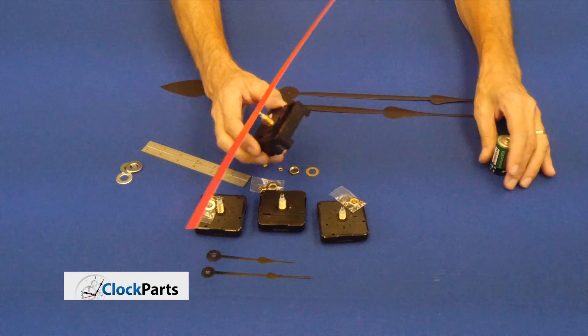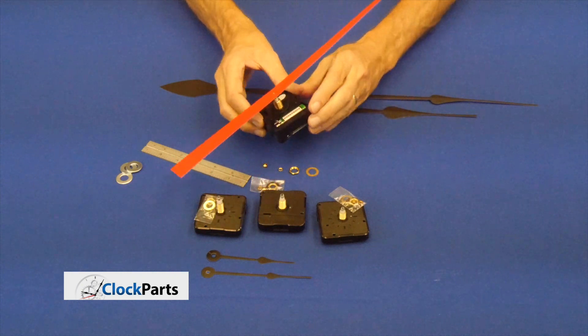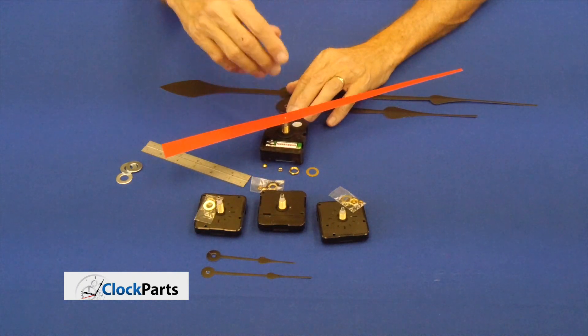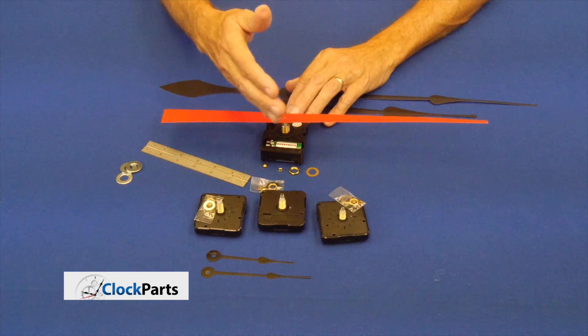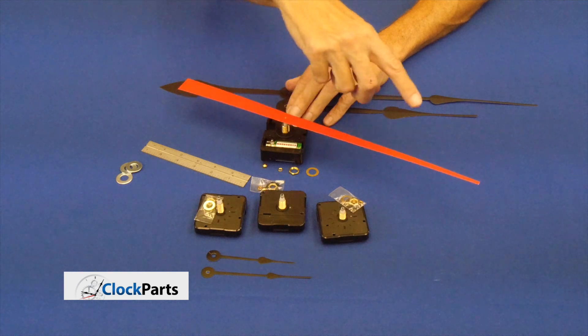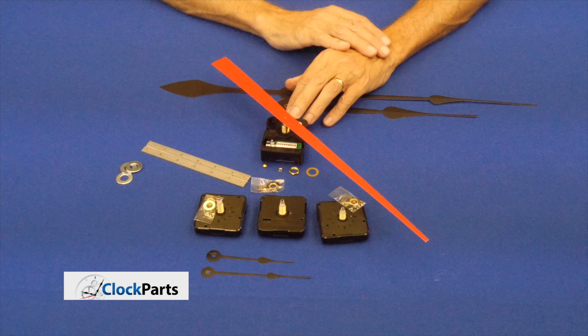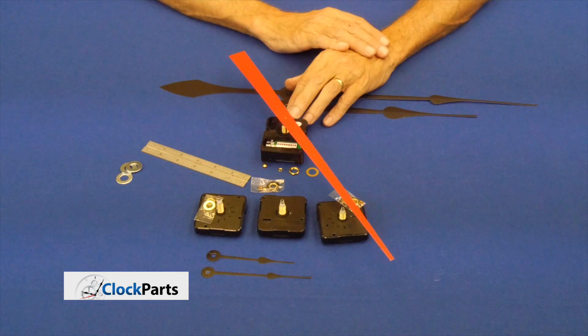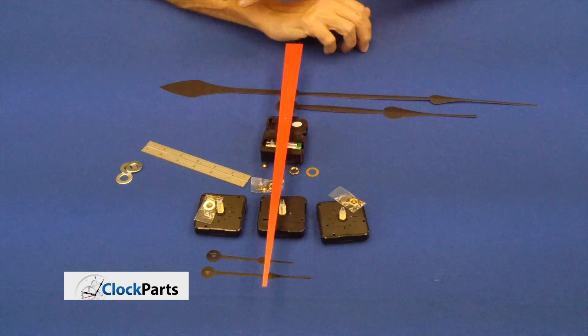And so let's take a look at how a continuous sweep motor works instead of the second hand ticking. It will just have a continuous sweep mode. This is the high torque one, so it can drive large hands. However, the smaller regular mini quartz motors will also function in the same exact way with a continuous sweep.